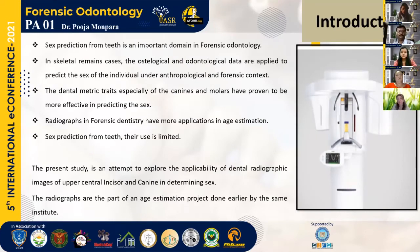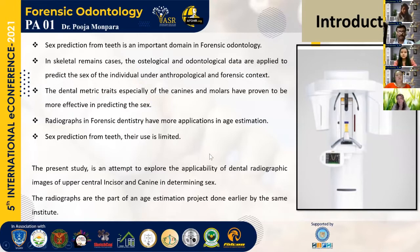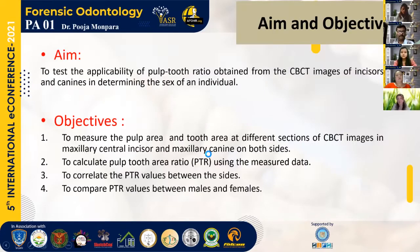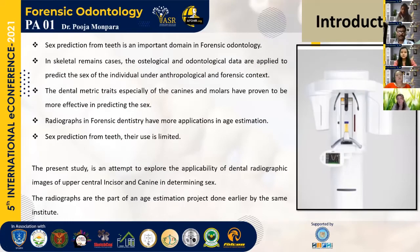Coming to the introduction, sex prediction from the teeth is an important domain in forensic odontology. In skeletal remains cases, osteological and odontological data are applied to predict the sex of an individual under anthropological and forensic contexts. The dental metrics, especially of the canine and the molars, have been proven to be more effective in predicting the sex. Here, radiographs in the forensic industry have more application in age estimation, but their use in sex prediction from the teeth is very limited. The present study is an attempt to explore the applicability of dental radiographic images of the upper central incisor and the canine in determining the sex. The radiographs used are part of an age estimation study done previously in this same institute.